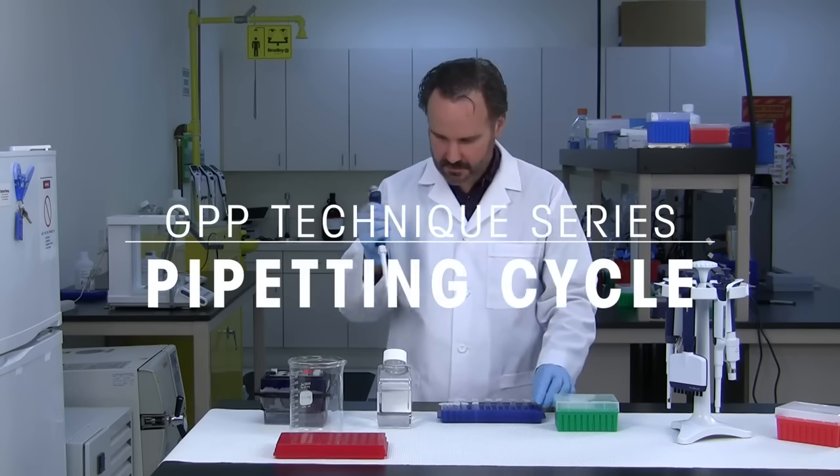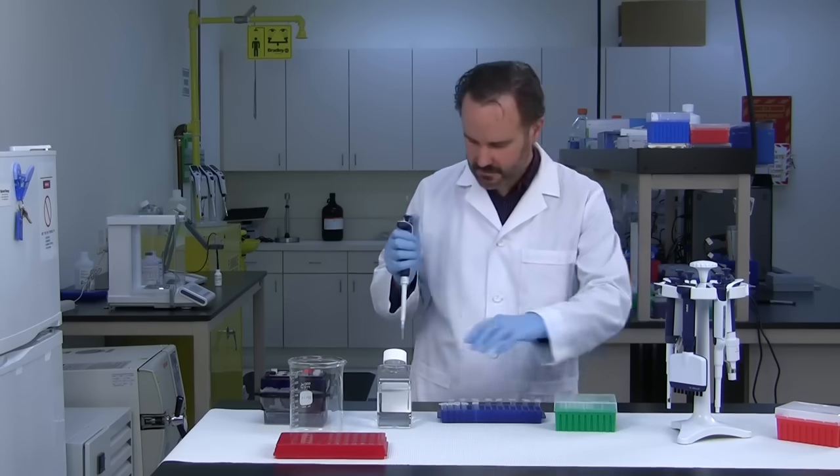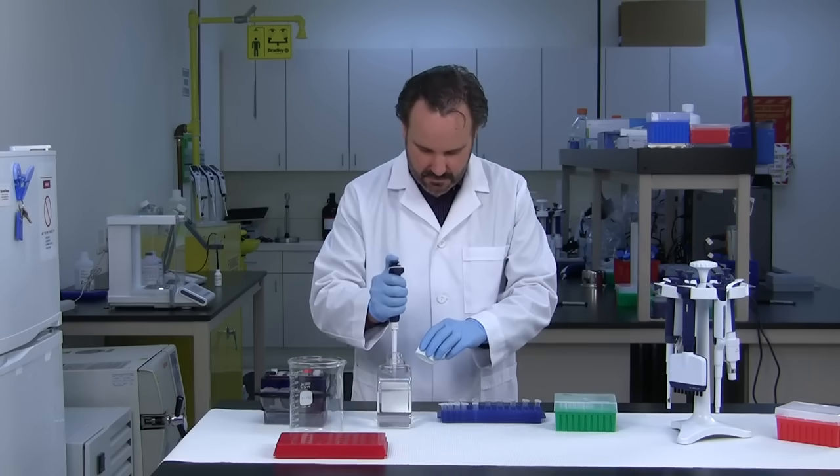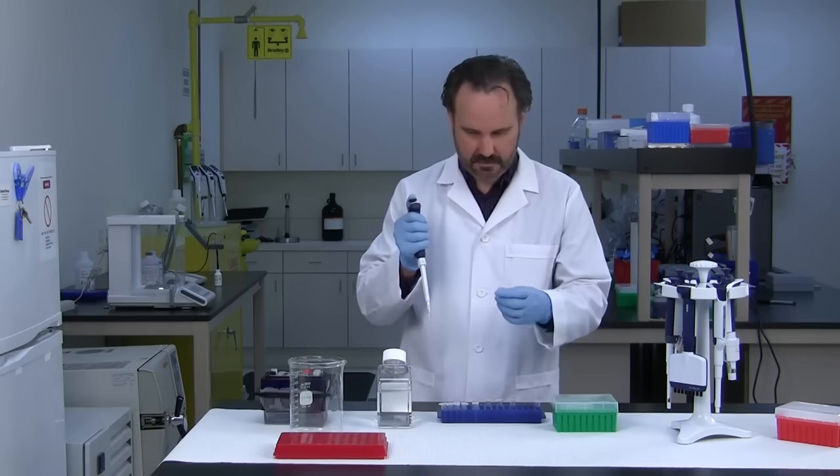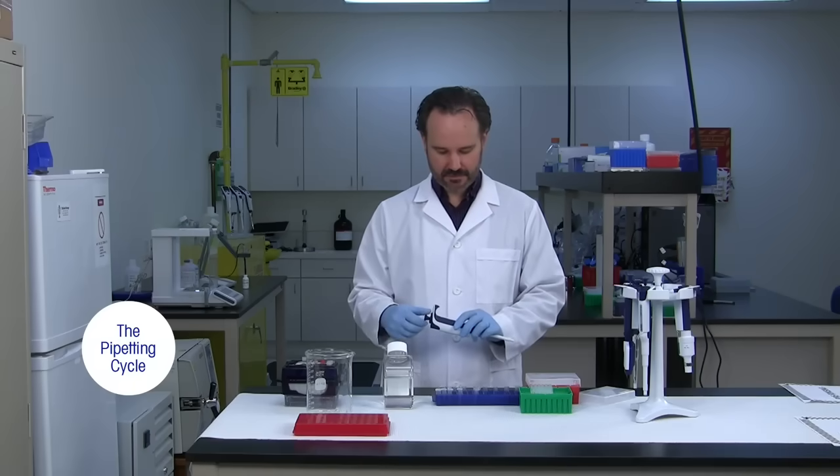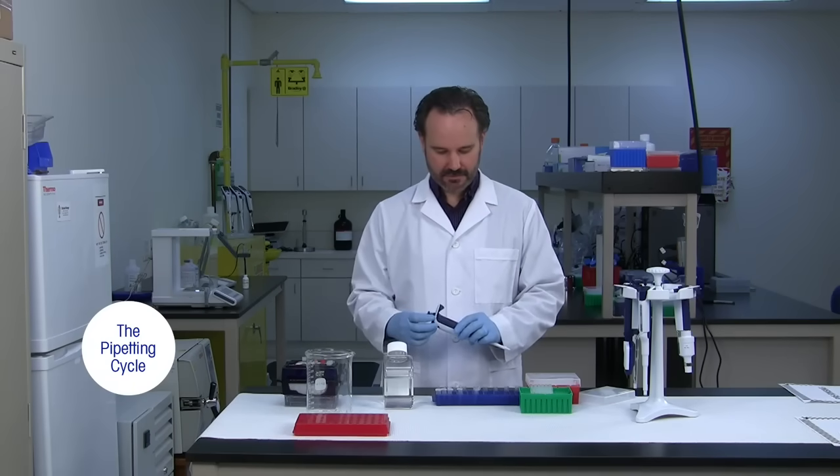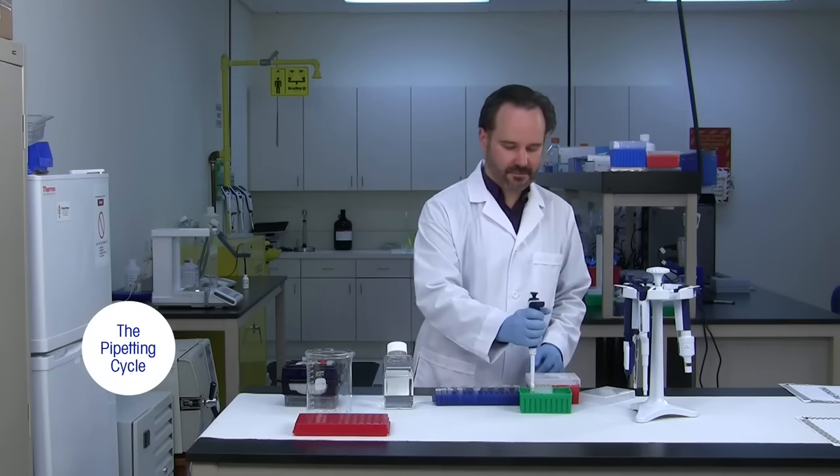Pipetting with an air displacement pipet is a five-step process that's sometimes referred to as forward pipetting. After setting the volume, place the tip onto the shaft or liquid end of the pipet, making sure that it's secure to prevent leakage.